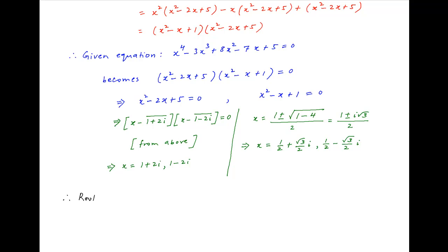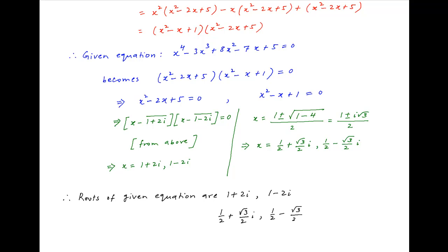Therefore, to summarize, the roots of the given equation are 1 plus 2i, 1 minus 2i, one-half plus root 3 over 2 times i, and one-half minus root 3 over 2 times i. And this is the required answer.